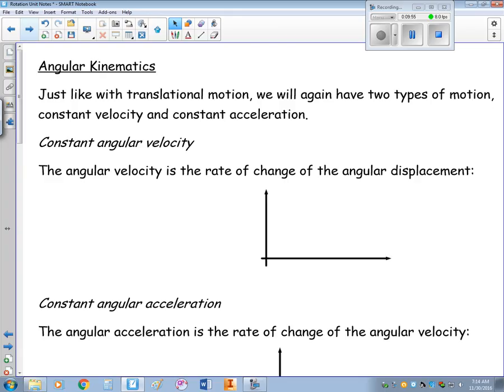With the angular kinematics, just like we had with translational motion, we can have two types of motion. We have constant velocity and constant acceleration.